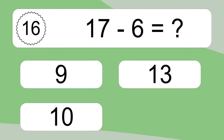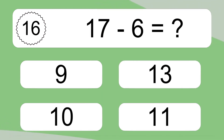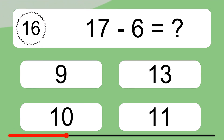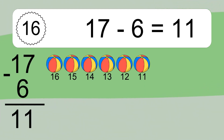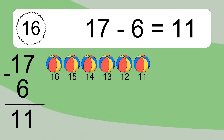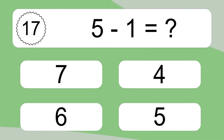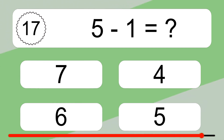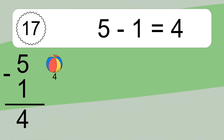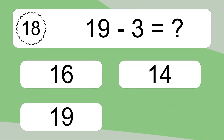17 minus 6 equals what? 17 minus 6 equals 11. Let's count it: 16, 15, 14, 13, 12, 11. 5 minus 1 equals what? 5 minus 1 equals 4. Let's count it: 4.